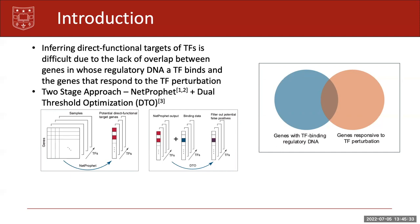DTO builds on the idea of picking a threshold pair for binding data and perturbation data instead of picking arbitrary thresholds for each dataset to generate more significant overlap of genes. Both these algorithms claim to capture the direct functional targets of TFs.